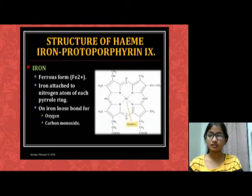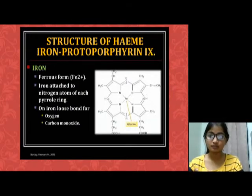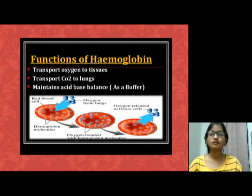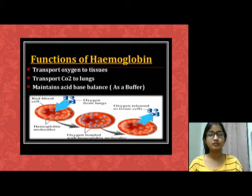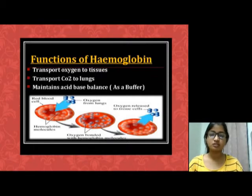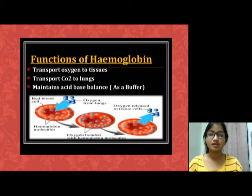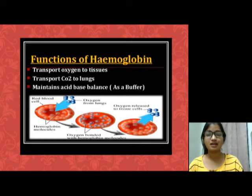This is the complete structure of Hemoglobin. In the structure of Hemoglobin, iron is present in the ferrous form Fe2+. Now we come to the functions of Hemoglobin: first, transport oxygen to tissues; second, transport carbon dioxide to lungs; third, maintain acid-base balance as a buffer.